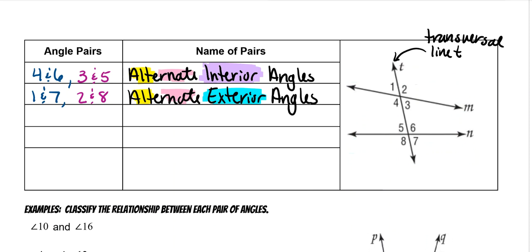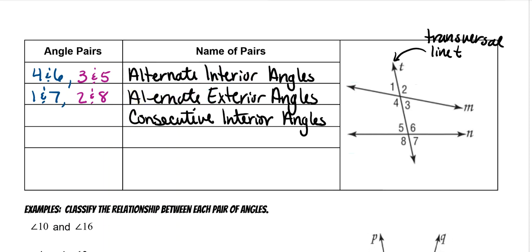Next, we have consecutive interior angles. Consecutive just means next to each other. So they're going to be on the inside, but on the same side of the transversal. The pairs are angles four and five, and angles three and six — same side on the inside.